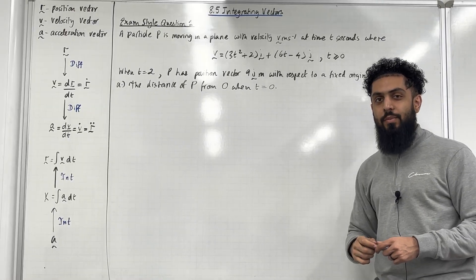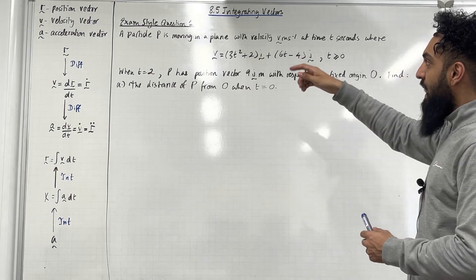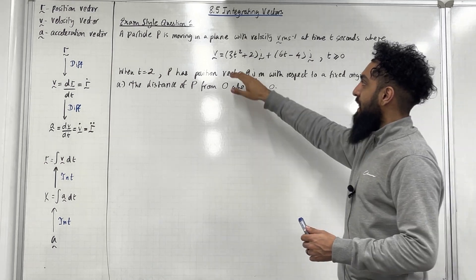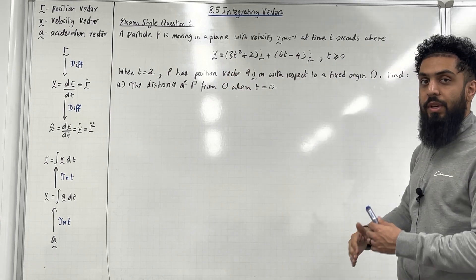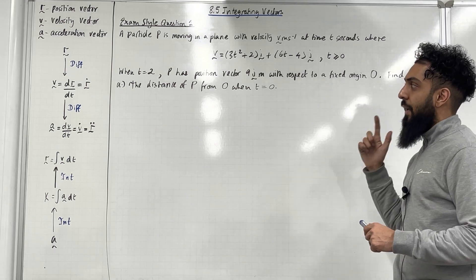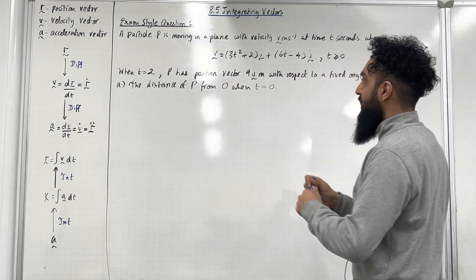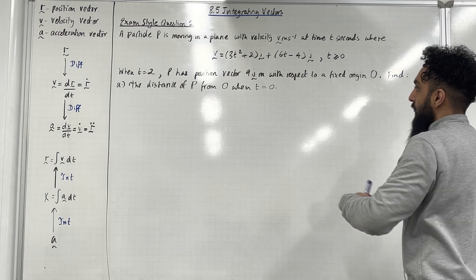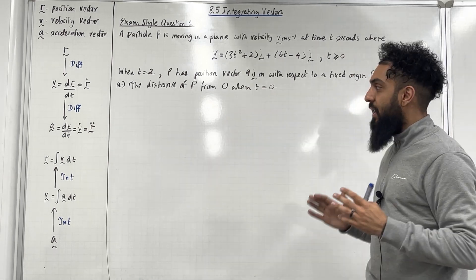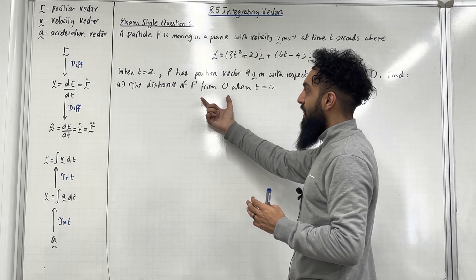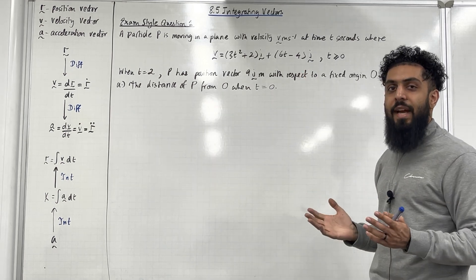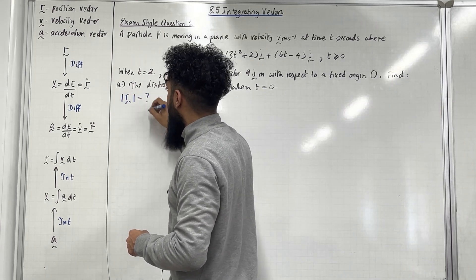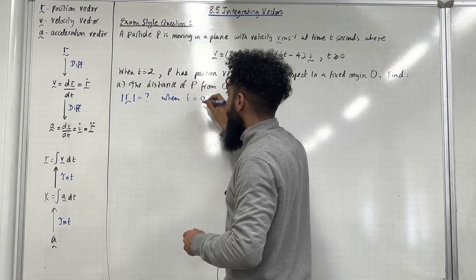Here is exam style question 1. A particle P is moving in a plane with velocity V squiggle meters per second at time T seconds, where the velocity vector equation is given by this. T is greater than or equal to 0. When T is equal to 2, P has position vector 9J meters with respect to a fixed origin O. Find part A, the distance of P from O when T is equal to 0.